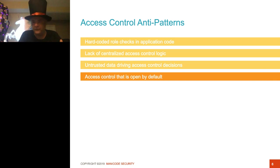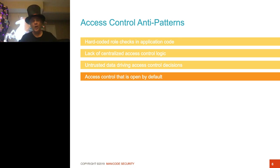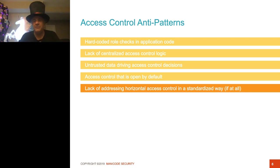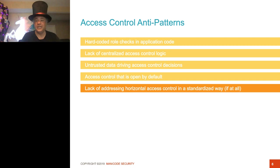I'm also worried about access control that's open by default. What I mean by open by default is: if something goes wrong in the software, that access is granted. When there's a failure in your access control logic, we want to deny right away. I'm also worried about the lack of addressing horizontal access control — data-specific access control. It's rarely addressed well in frameworks. It's something we have to custom-code ourselves frequently, and it's very difficult to get right. It's also something that roles do not address at all.